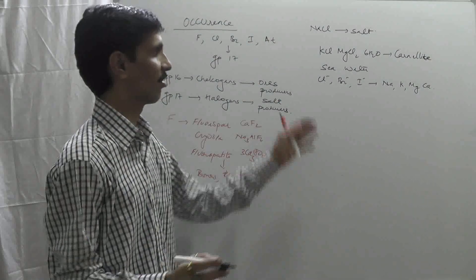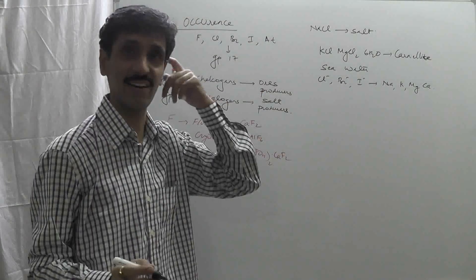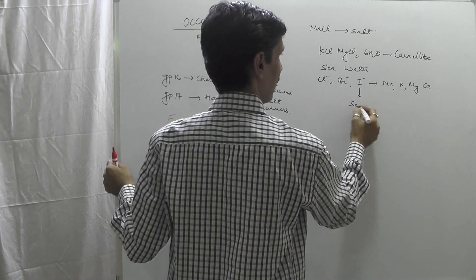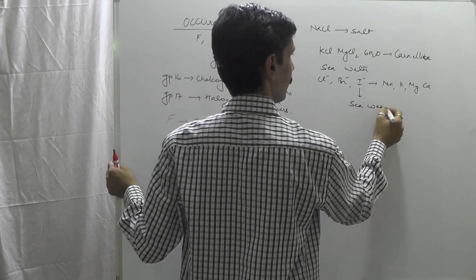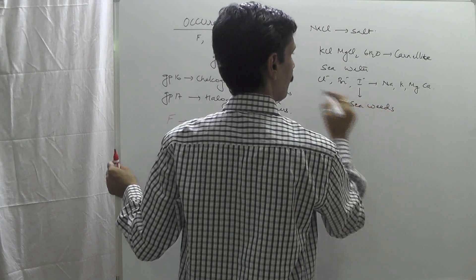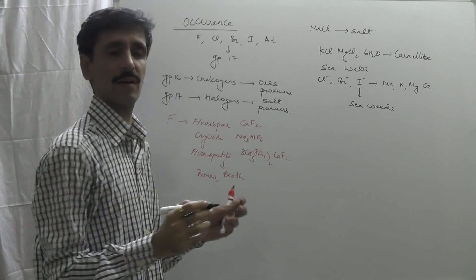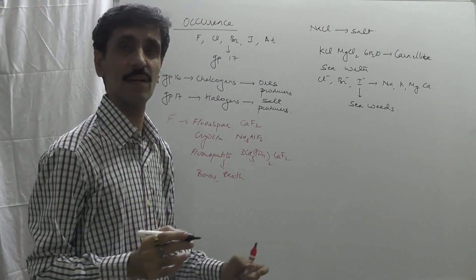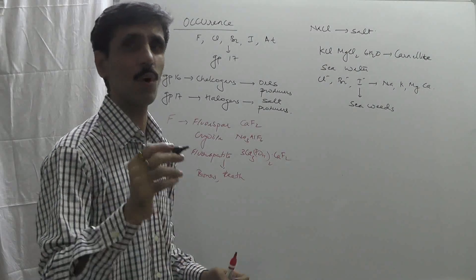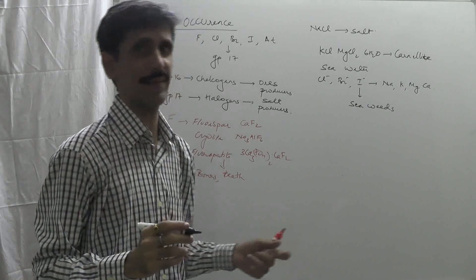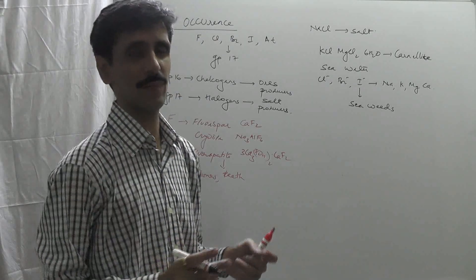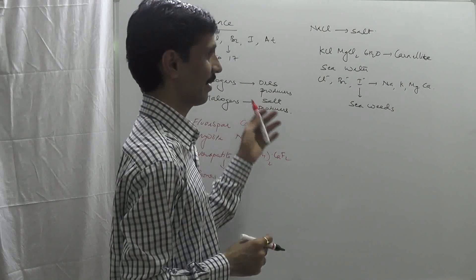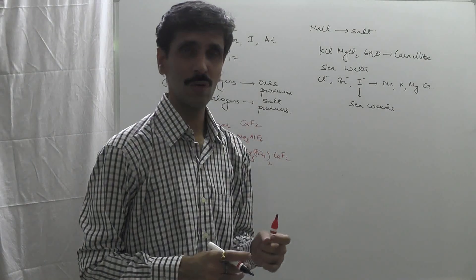When it comes to iodine, it is basically present in seaweeds — that is the greatest occurrence of iodine. Bromine is the only liquid nonmetal — remember this. These are the general occurrences with respect to group number 17.